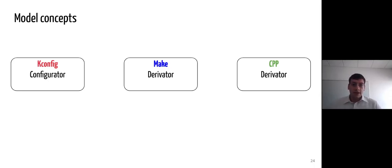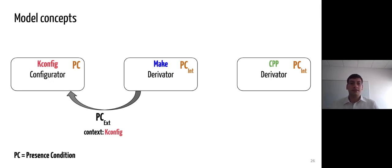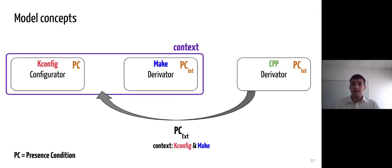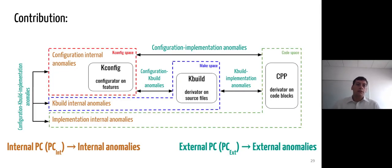The Linux build system is made of a configurator and two derivators. The configurator's presence condition and the derivator's internal presence conditions consider constraints inside their own space. The external presence conditions consider also at least another space as the context of the asset. For example, the selection of source files and code blocks relies on constraints and features, so the context of the make space is the kconfig space. The selection of code blocks also relies on the selection of its source files, so the context is made of both spaces. Internal presence conditions check for internal anomalies, and external presence conditions check for external anomalies.